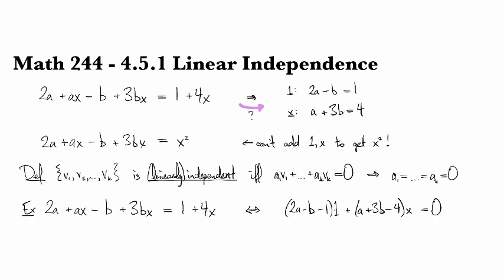And so now, since you knew, even though you didn't previously necessarily know the jargon for it, that 1 and x are linearly independent, you were able to conclude that the only way that this linear combination could add up to 0 is if 2a minus b minus 1 is equal to 0, and also if a plus 3b minus 4 is equal to 0.